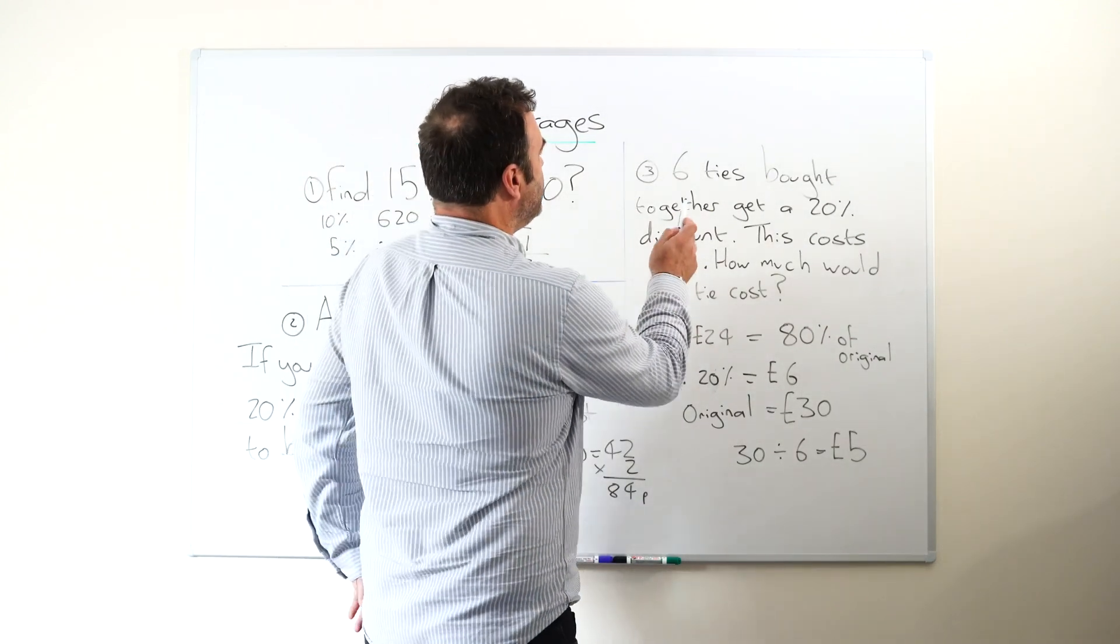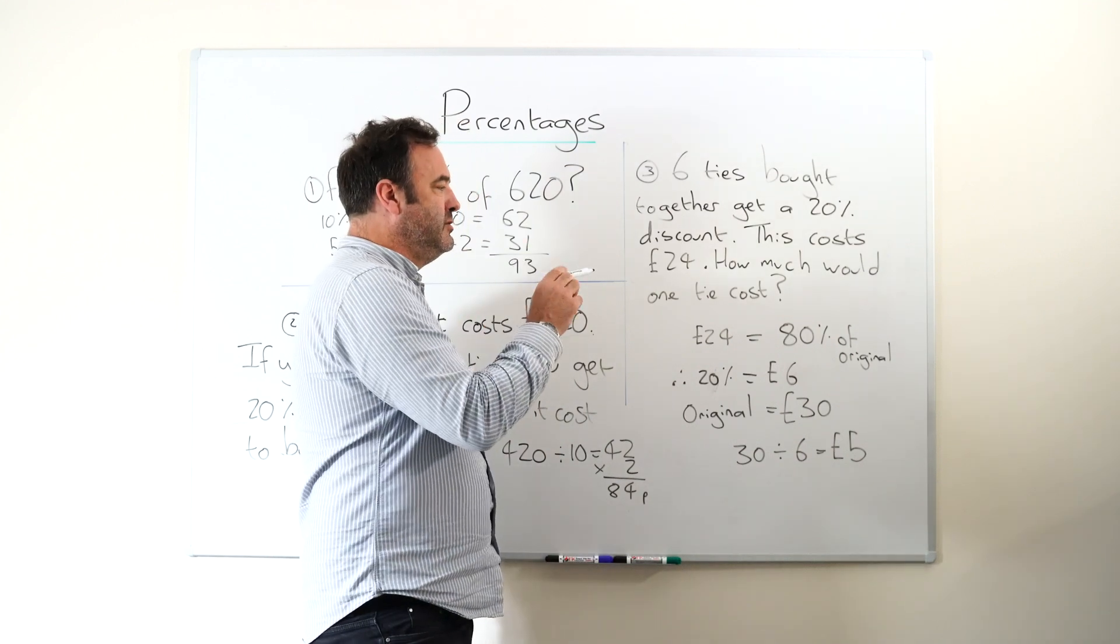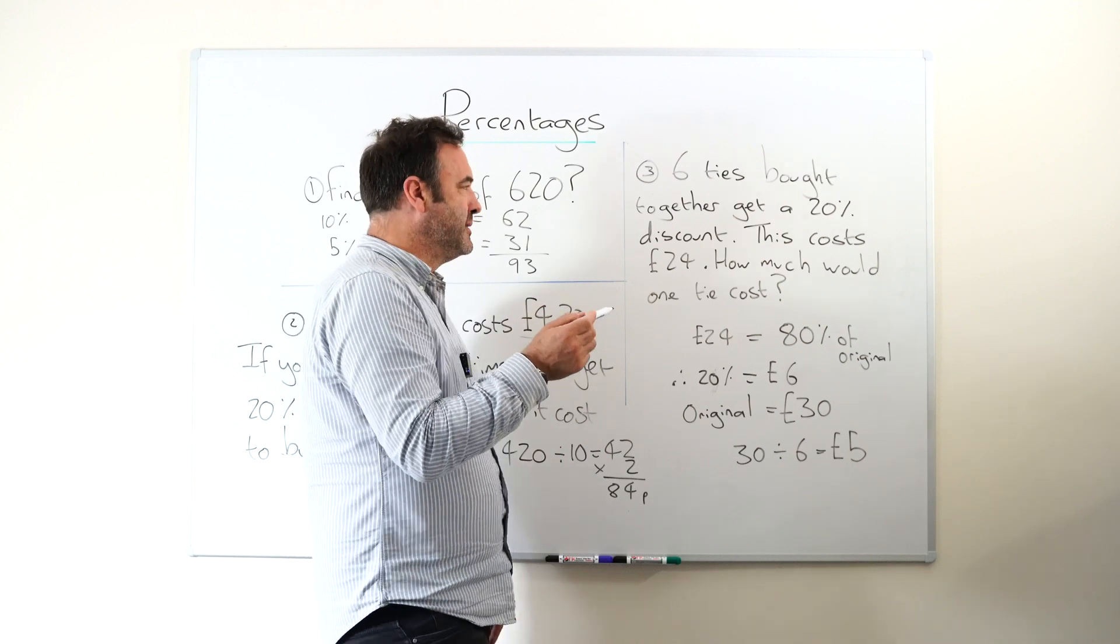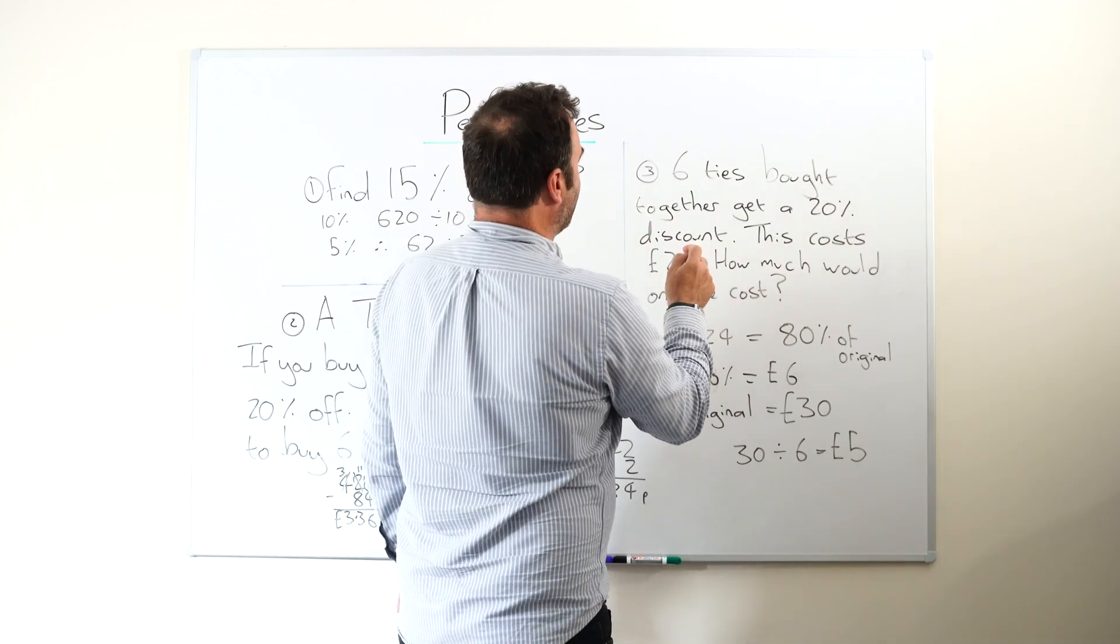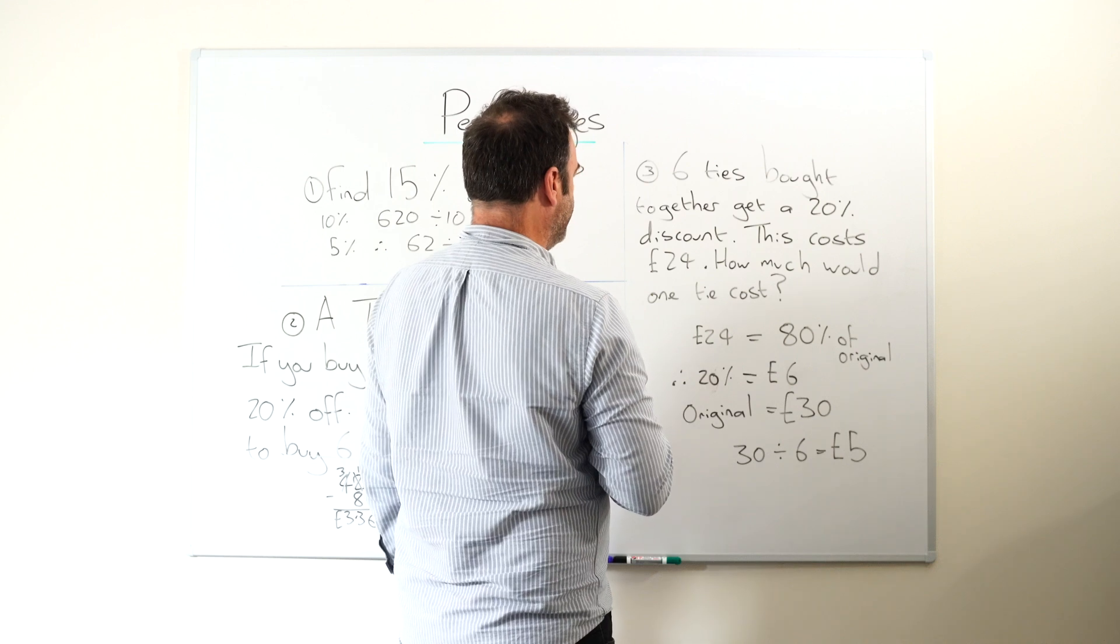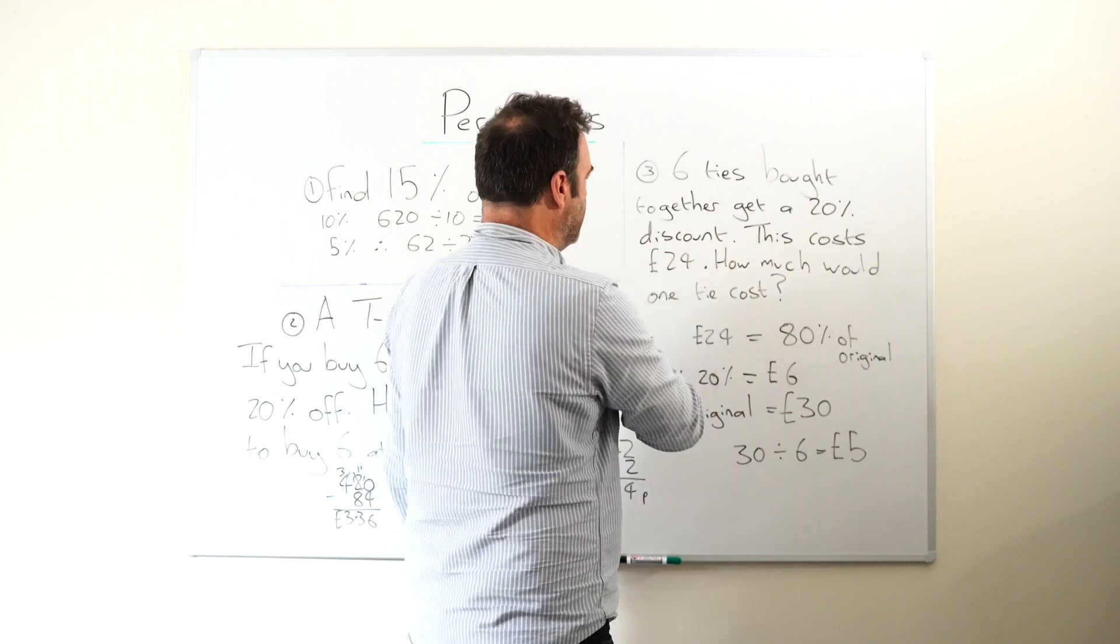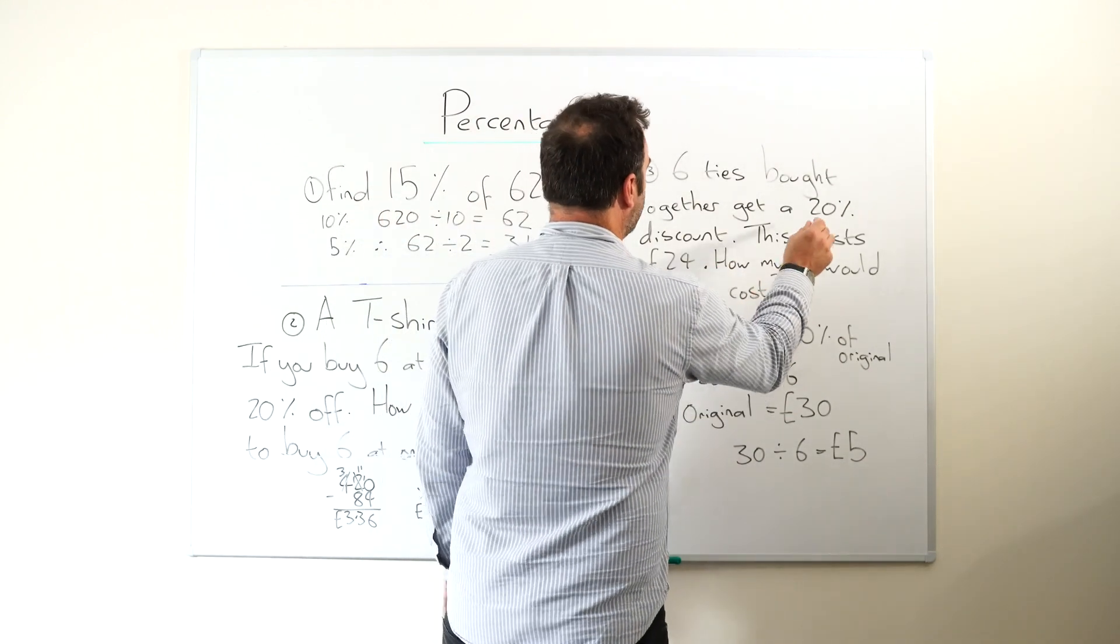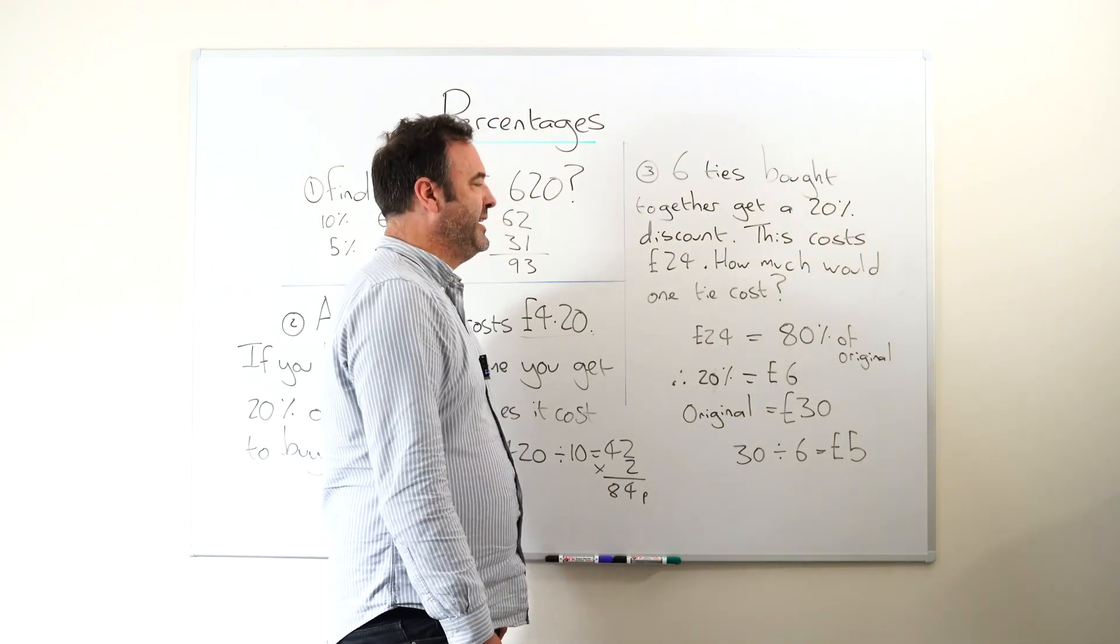Next thing, a bit more complicated, but it's very important for kids to know this type of question and understand it. Once you've done it a couple of times it's not difficult, but it's important they understand because this is where kids go wrong normally. Six ties brought together cost, if you buy all six together you get the 20% discount, which costs 24 pounds. But what would it cost if I just wanted one tie? Now this is the bit that could get overlooked. If we're buying one, we're no longer getting the 20% discount, we're not getting that. So what we've actually got to do before we divide by